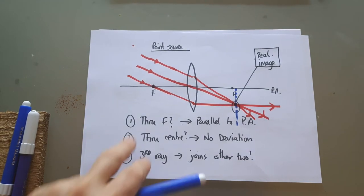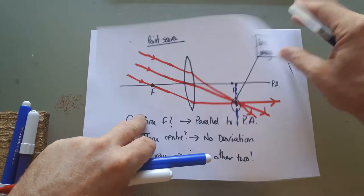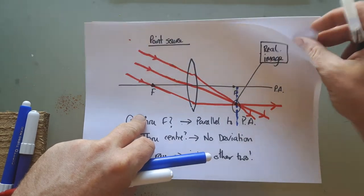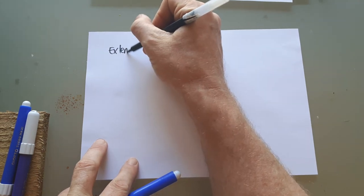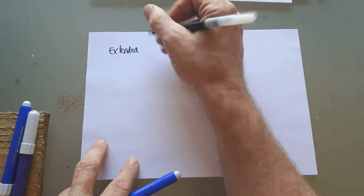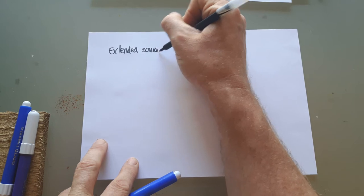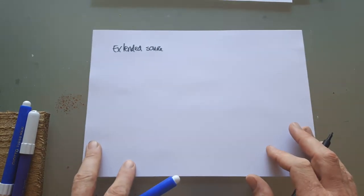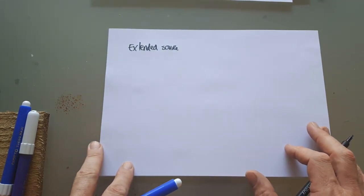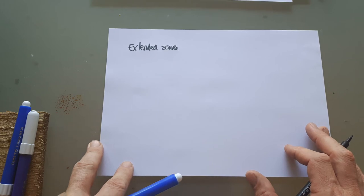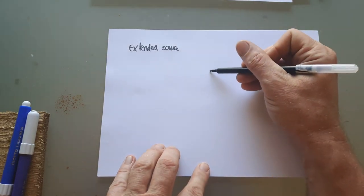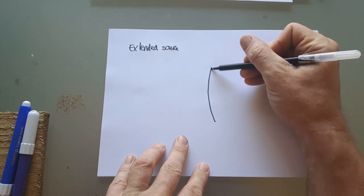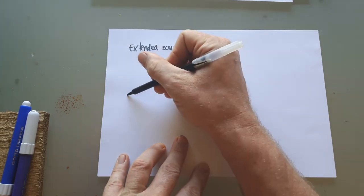That's a point source. Now we're going to look at an extended source. Extended source is the same process just carried out twice. Here's my extended source. An extended source might be something that's much bigger than a star in terms of when you see it. Something like the moon would be an extended source because when you look at the moon you can see the top of the moon and the bottom of the moon.